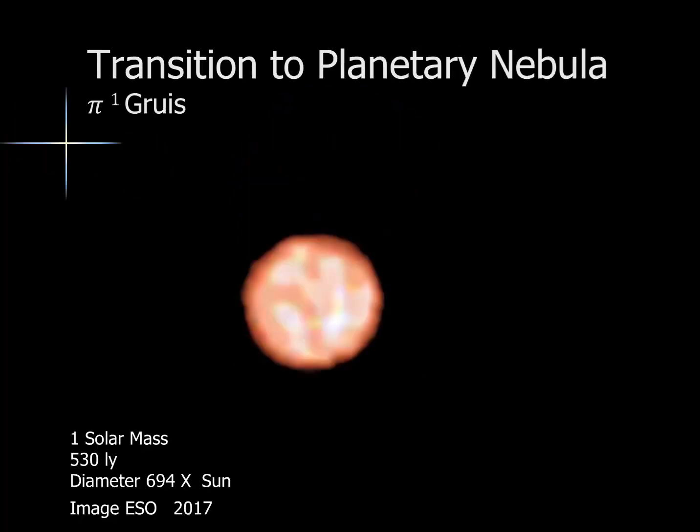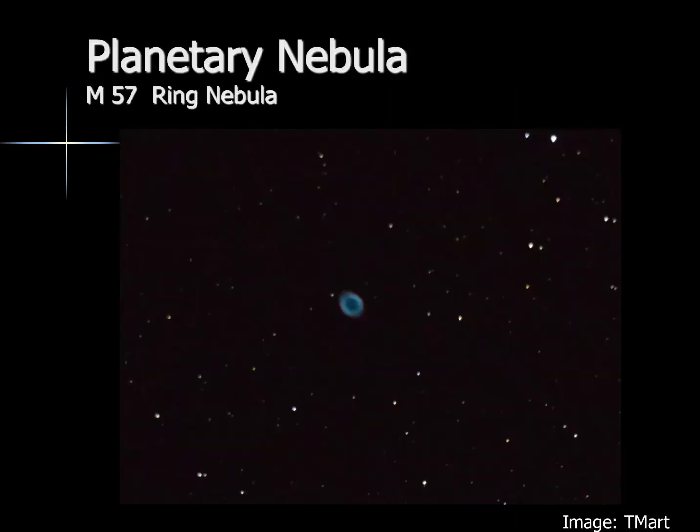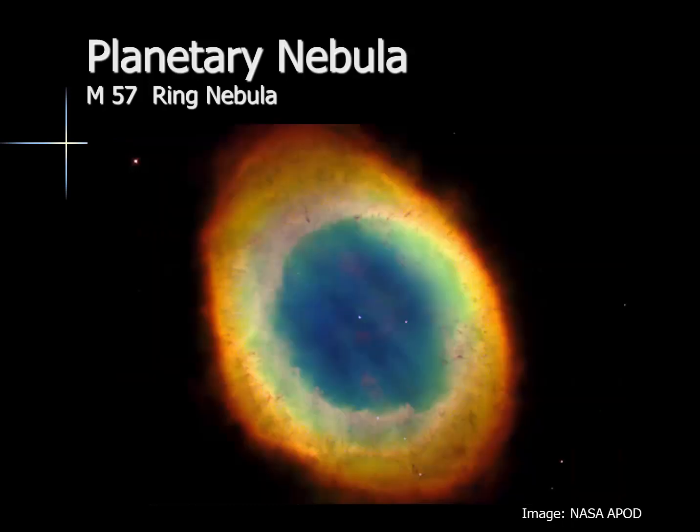Here we see Pi-1 Gruus, a one solar mass star 530 light years away. We believe that this star is transitioning into a planetary nebula — its diameter is nearly 700 times larger than that of the sun. Other planetary nebulas were known as very distinctive, small patches in the sky that often had a round shape but did not move like the planets. This is an image I took of M57, or the Ring Nebula. It pales a little bit when compared to the Hubble telescope view — this enhanced color image shows much of the structure of the gases surrounding the remnant star.